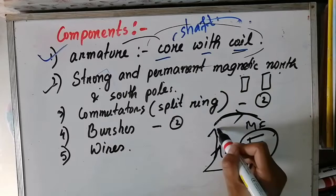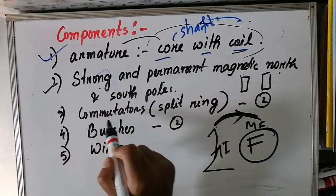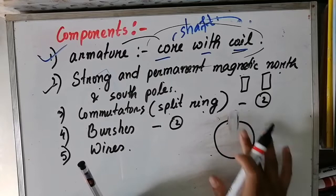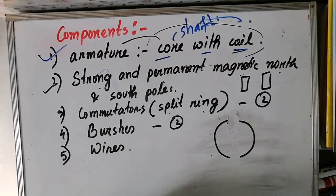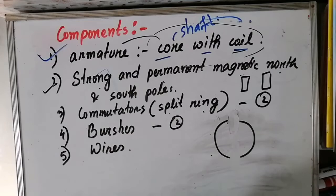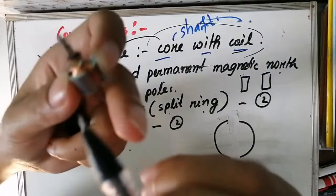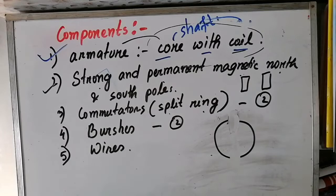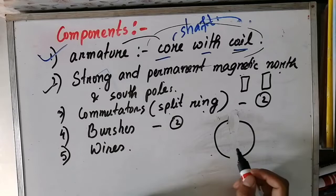Another component is the commutator. The commutator is a split ring - it's like a ring that has been split into two halves. The commutator has two segments that are separated. The function of the commutator reverses the current direction.